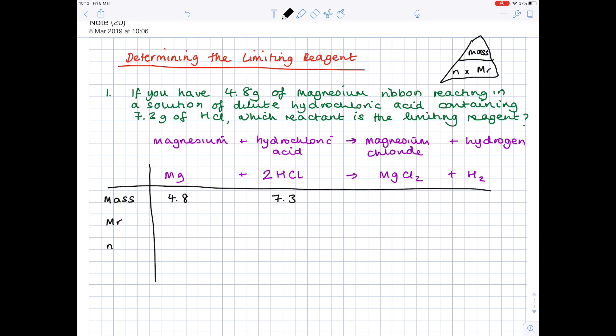Once you've entered the masses into the table, you can now enter the MRs, which you get from the periodic table. So magnesium has a mass of 24.305. Hydrochloric acid is going to be hydrogen, which is 1 plus chlorine, which is 35.45, which gives you a total of 36.45.